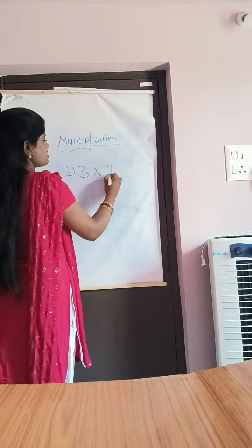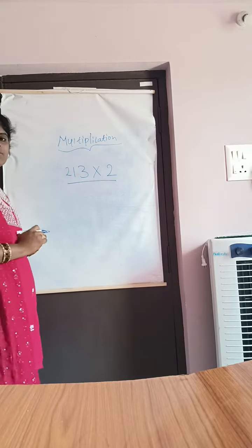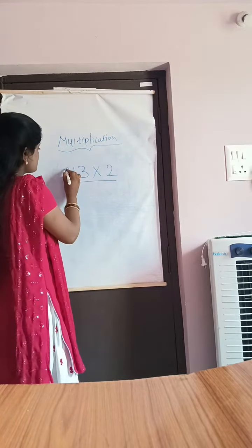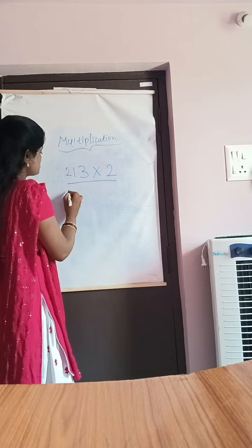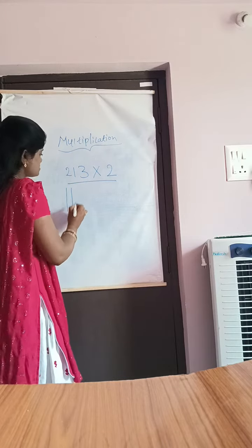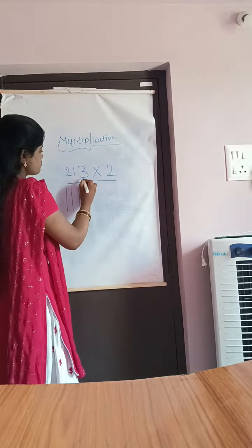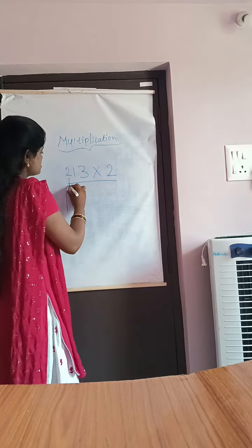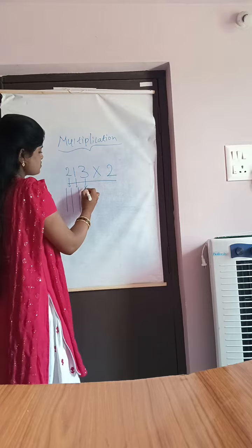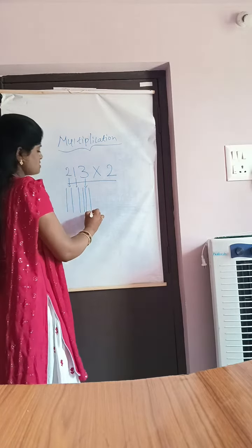So, it is any digit you can take. This is the question I am having to multiply. How to multiply? If you are having 2 here, better to take 2 straight lines. Next one is 1. So this is for 2, this is for 1, this is for 3. Now you need to take 3 straight lines.